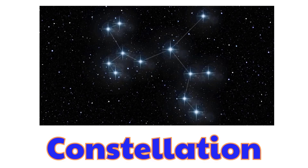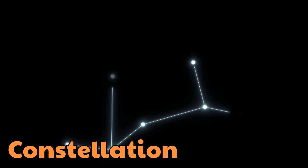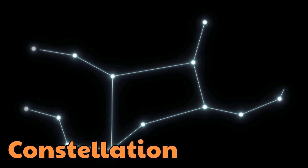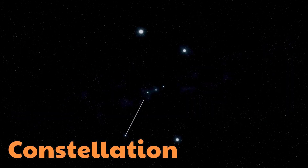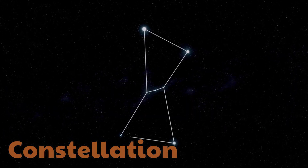Constellation. This is a constellation. A constellation is a group of stars that people see in the night sky, and it looks like a specific shape.